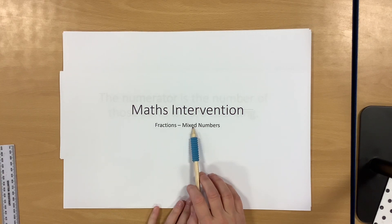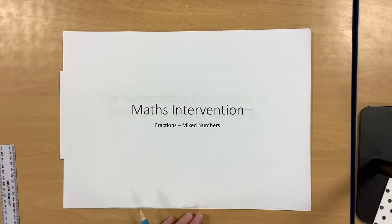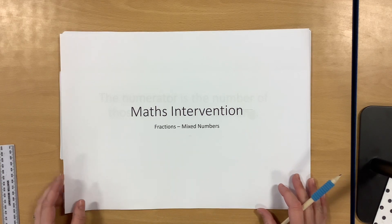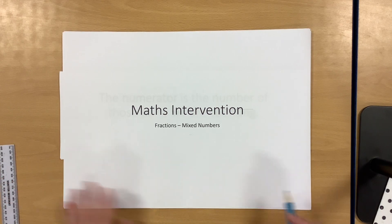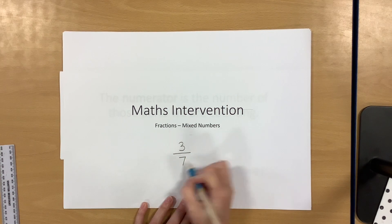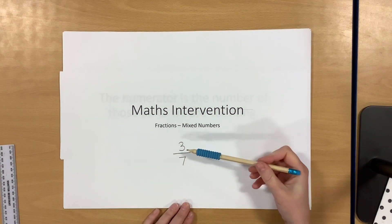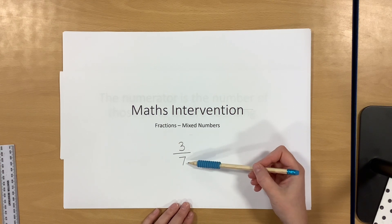So first of all, we're talking about mixed numbers, which are a type of fraction. Before we start, we're just going to recap some really important points any time we're talking about fractions. So far we've met fractions that might look like this, and we've learned that this number is called the numerator, and this number is called the denominator.